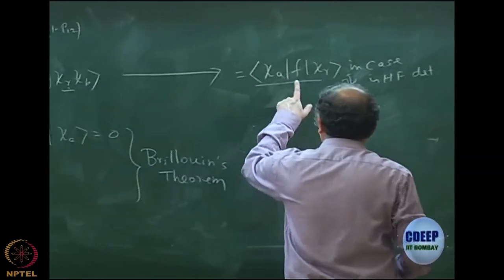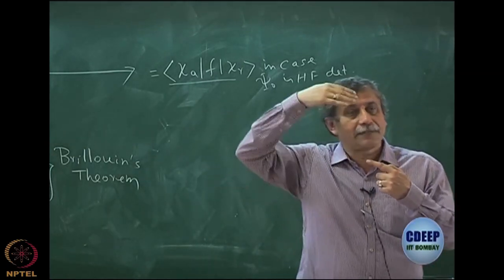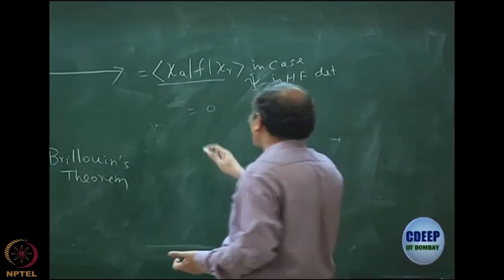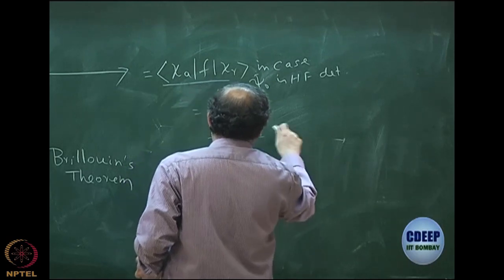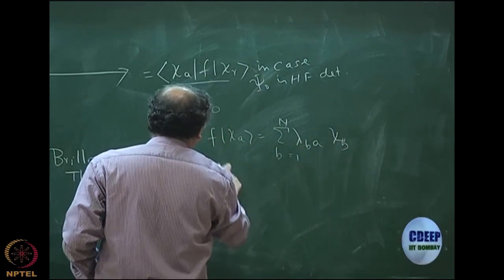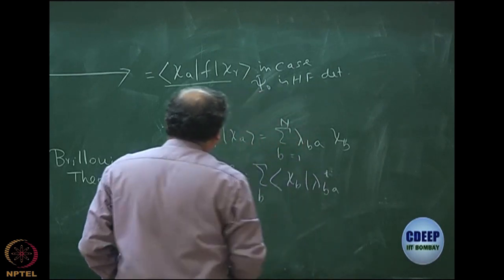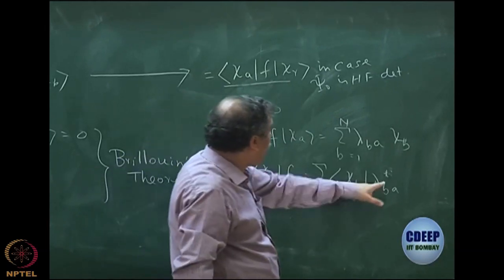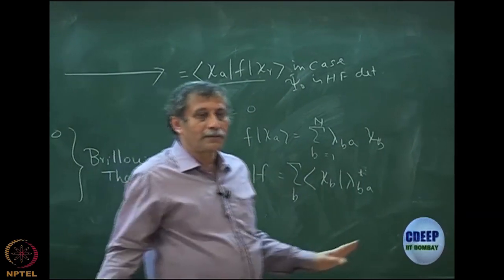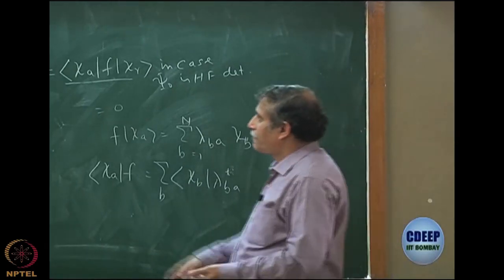Since the Fock operator acts on χₐ and transforms within the occupied set, and the virtual orbital χᵣ is orthogonal to all of the occupied set, this quantity equals 0. Even in the non-canonical case, F(χₐ) = Σᵦ λᵦₐ χᵦ over occupied b, so when we close with χᵣ, all χᵣ are orthogonal to χᵦ, giving 0. So in both canonical and non-canonical Hartree-Fock, this matrix element is 0.